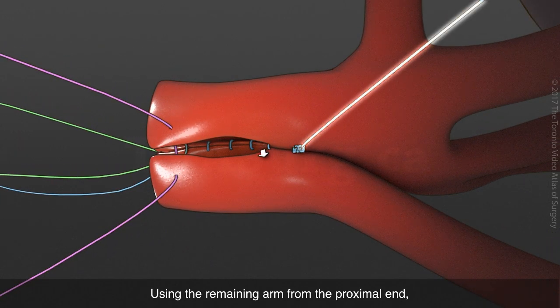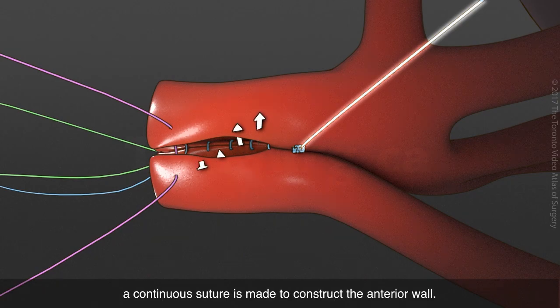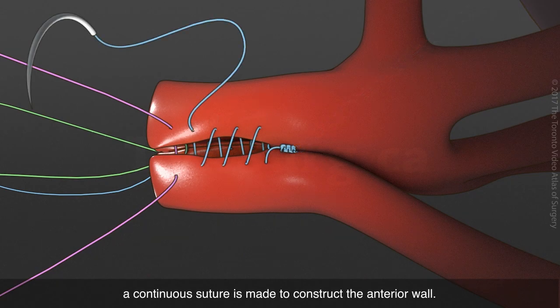Using the remaining arm from the proximal end, a continuous suture is made to construct the anterior wall.